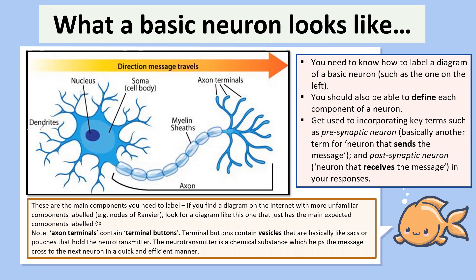You need to know what the dendrites do, what the soma is, the axon terminals, the myelin or myelin sheath, and the axon. You need to know not just what they are by name but what function they serve with reference to communication between and within the neuron — so you need to be able to label a neuron. A lot of diagrams on the internet are a little too advanced and include components like the nodes of Ranvier and Schwann cells that we don't actually need to know, so stick to the more simplified version.